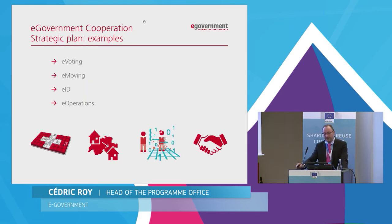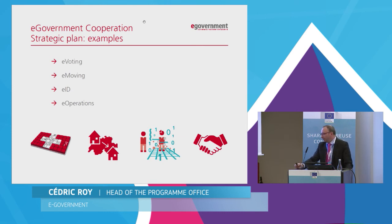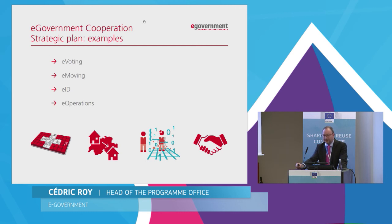On this slide you can see four projects of the strategic plan that concern directly the confederation, the cantons, and the communes. E-voting is the introduction of electronic voting nationwide. E-moving is the reporting and processing of addresses when a citizen moves from one commune to another. E-ID aims to establish an electronic identity valid nationally and potentially internationally. And lastly, e-operation — which will be my second example.